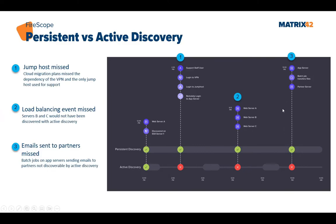Finally, another example: batch jobs. When an application server runs batch jobs every night — for example, sending reports to partners — this may only take seconds or minutes. It will not be captured by active discovery, but it will be covered by persistent discovery.